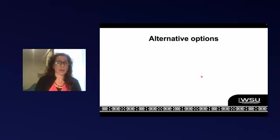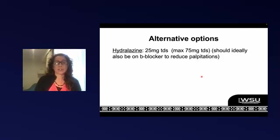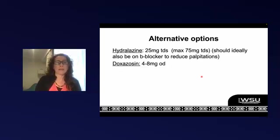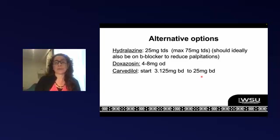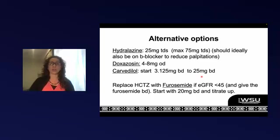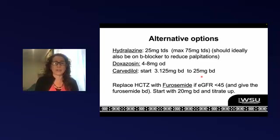A few last options to consider: hydralazine is a good option if patients have renal failure and some drugs are not tolerated or have caused side effects, though the challenge is three-times-a-day dosing. Doxazosin is useful in older men with prostatic hypertrophy. Remember carvedilol for heart failure patients. Finally, if the GFR is under 45, replace hydrochlorothiazide with furosemide 20 mg BD.